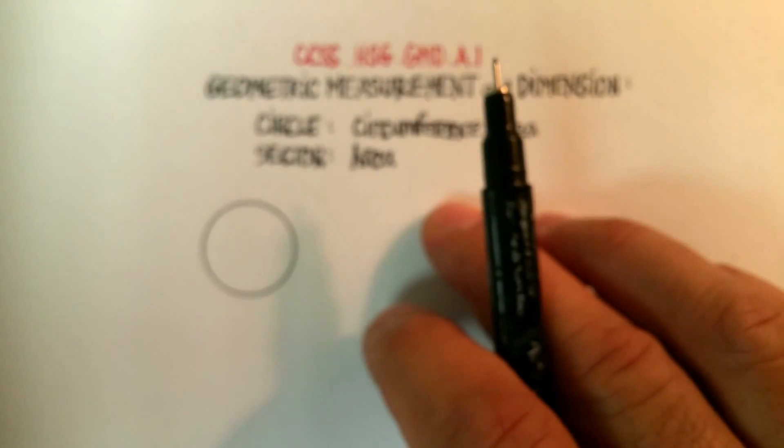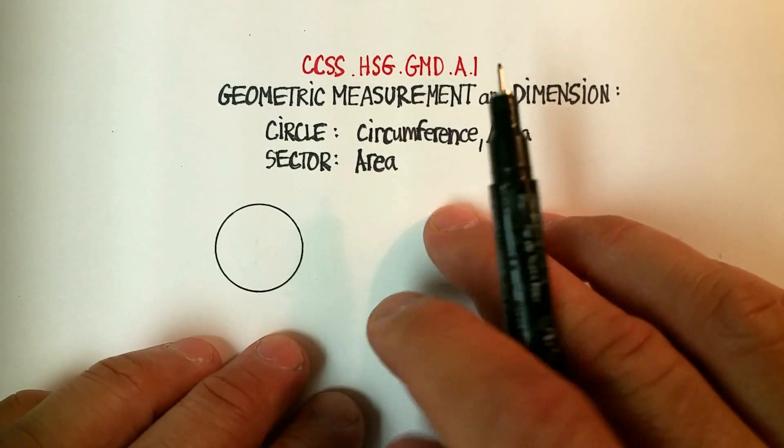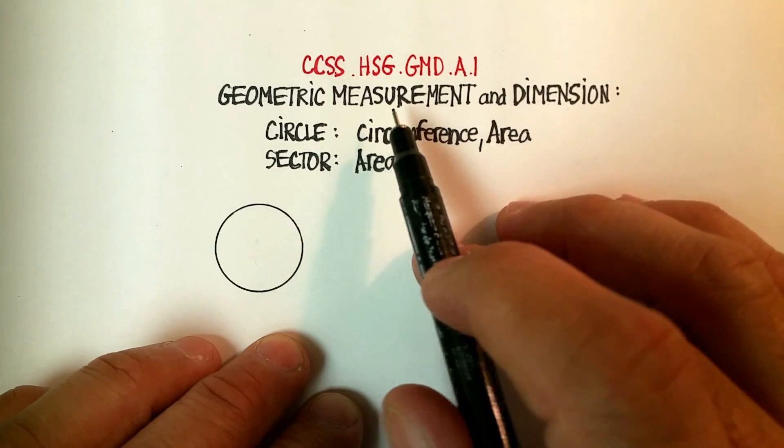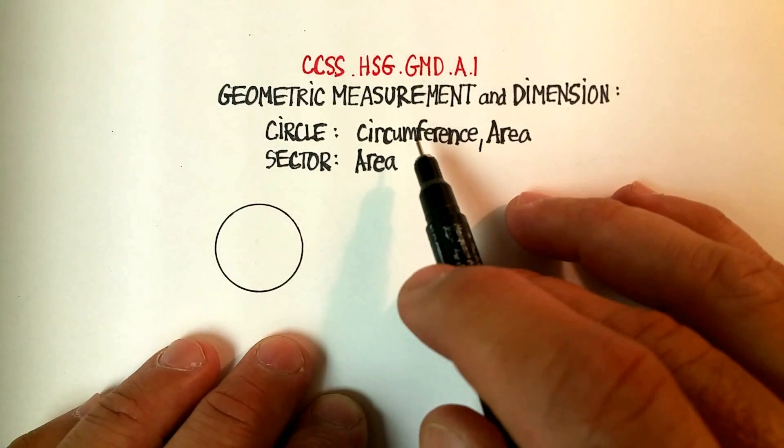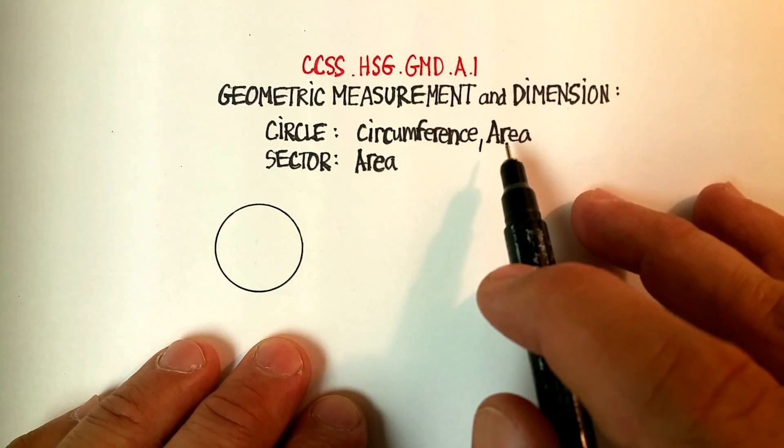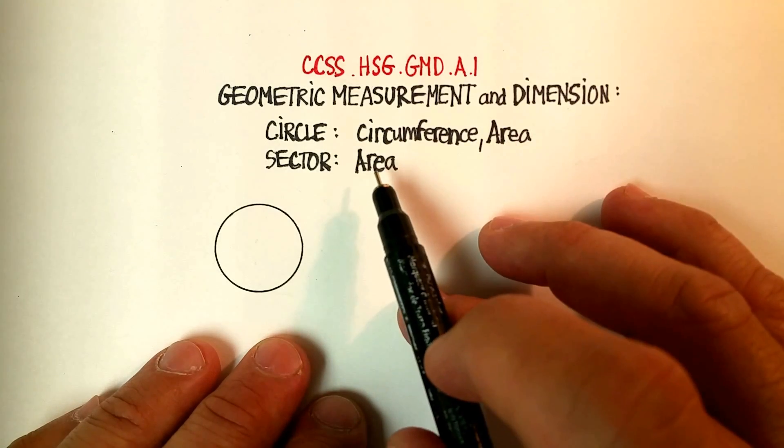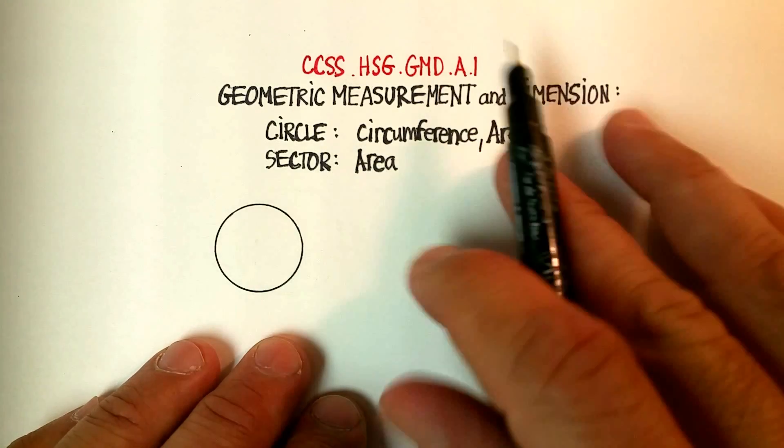Okay, in this video we're going to go over something called geometric measurement and dimension. We're going to talk specifically about the circumference and area of a circle, and then we're going to talk about the area of a sector.